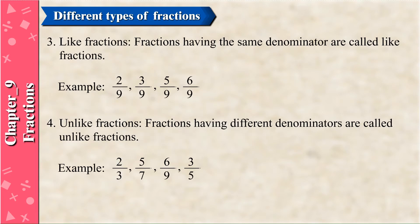Like Fractions: Fractions having the same denominator are called like fractions. Examples: 2/9, 3/9, 5/9, 6/9.